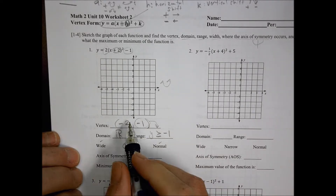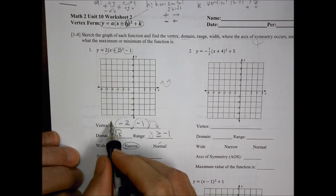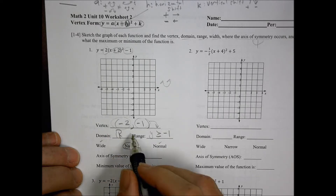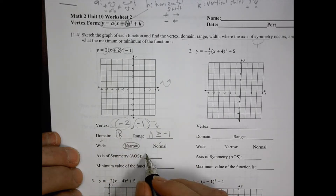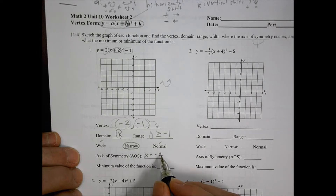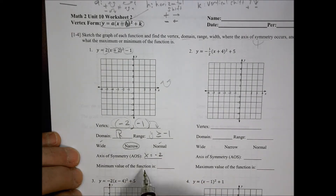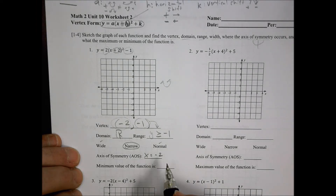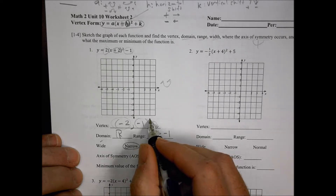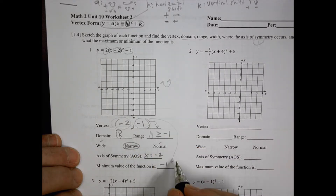The axis of symmetry — we find that by looking at the x value of the vertex, so the axis of symmetry is x equals negative two. That's where it's going to make that curve or bend. And the minimum value of the function is going to be negative one — we also get that from the vertex point.